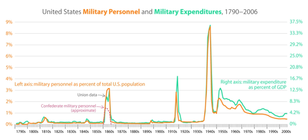In the struggle for control of North America, the contest between Great Britain and France was the vital one; the conflict with Spain, a declining power, was important but secondary. This latter conflict reached its height in the War of Jenkins' Ear, a prelude to the War of Austrian Succession, which began in 1739 and pitted the British and their American colonists against the Spanish. In the colonies the war involved a seesaw struggle between the Spanish in Florida and the West Indies and the English colonists in South Carolina and Georgia.